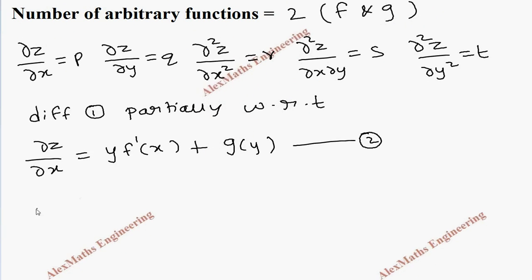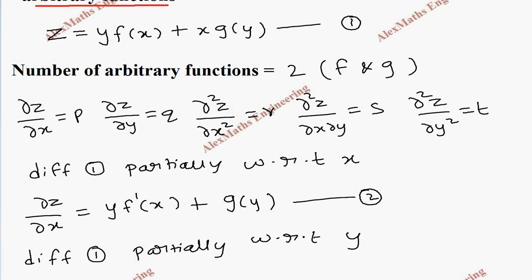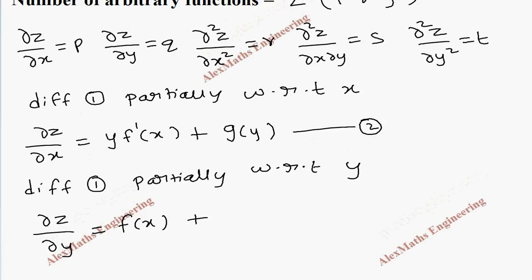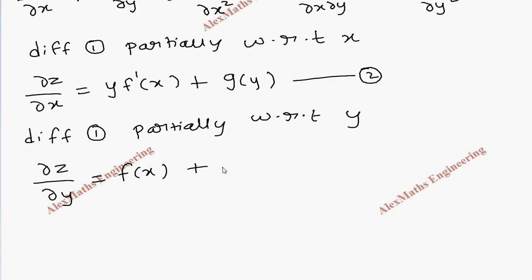In the same way, let's take expression 1 again and differentiate it partially with respect to y. So this will become dou z by dou y equal to: since we differentiate with respect to y, f of x is constant and is written as it is, and the derivative of y is 1, plus the second term x into g of y — x is constant so x is written as it is and g of y derivative is g dash of y. This is taken as the third expression.